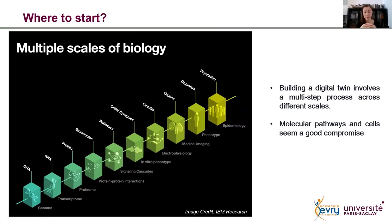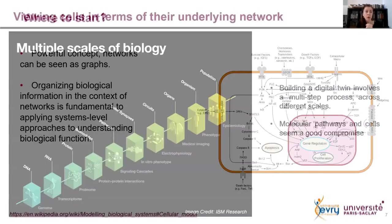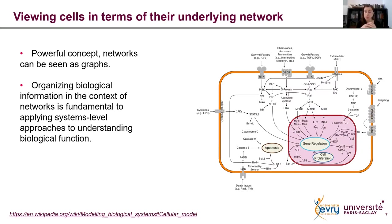Starting with molecular pathways and cell level seems like a good compromise. Viewing the cells in terms of their underlying network is also a very powerful concept. In biology, nothing acts in isolation. A list of genes or proteins implicated in a disease mechanism doesn't say much about the actual mechanism. What we really want to know is how these things interact together, how these factors exert control and regulation over one another. Organizing biological information in the form of networks allows us to borrow concepts from graph theory and mathematics and use their tools to make sense of the biological complexity.